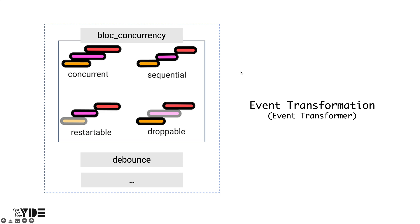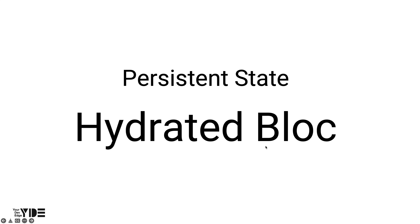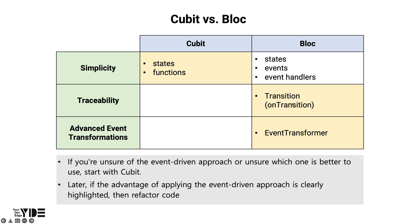Next, we will learn about event transformation, which is the advantage of Bloc compared to Cubit. Event transformation refers to transforming an event to suit the characteristics of the app before handling the event. App state is volatile by default — when the app is hard restarted or rebooted, the state is reset. However, there are cases where persisting state is desirable, such as in a shopping cart app. Learn about Hydrated Bloc, which makes it easy to implement state persistence. We'll also learn when to use Cubits and when to use Blocs. After completing this section, your overall understanding of Bloc will increase greatly.